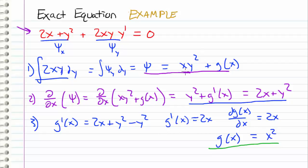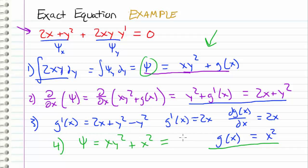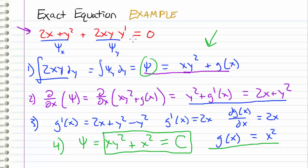Taking this result and plugging it back into our expression for psi, the final step gives psi equals xy squared plus x squared, set equal to a constant. This is our answer, and we can verify this is exactly what we got when we started with psi sub x. So it doesn't matter which side you start with, but it is strategic to pick the side that is easier to integrate — whichever function M or N is easier to integrate is typically the side you start with.